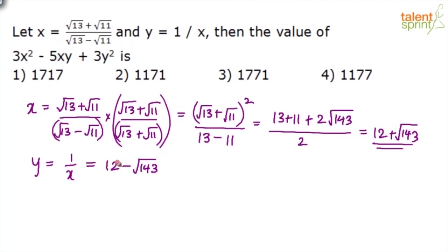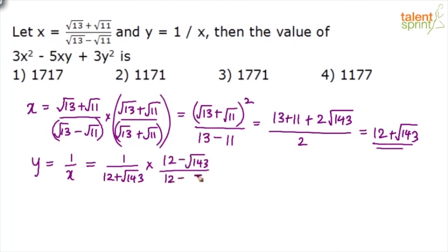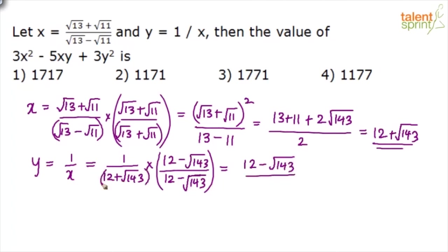Let me explain the process. This comes out to be 1 by (12 + √143). We multiply both numerator and denominator by (12 - √143). So: 1×(12 - √143) divided by (a + b)(a - b) = a² - b². That gives 12² = 144 minus b² = 143, which equals 1. So y is equal to 12 - √143.